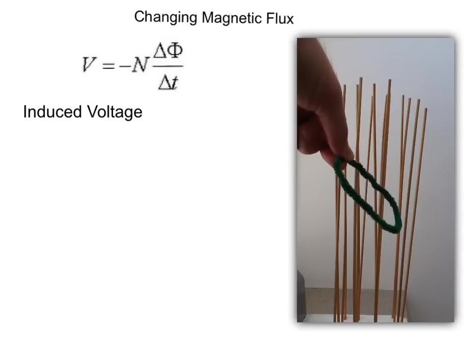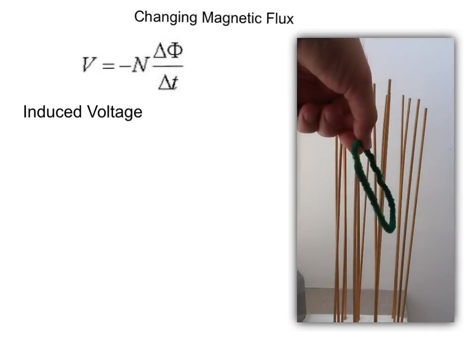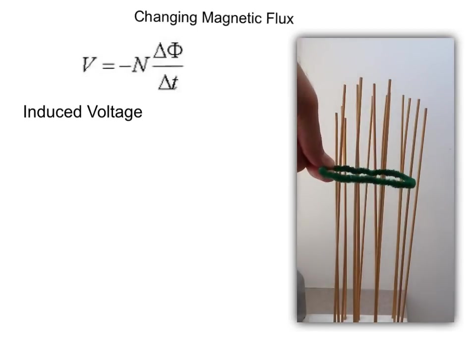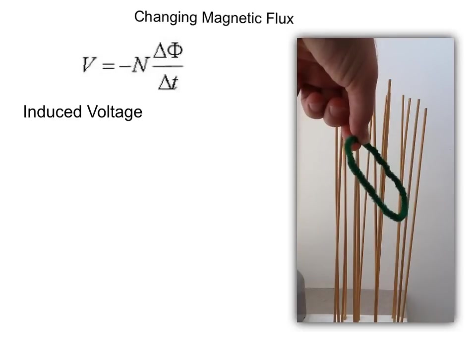And when I tilt it, I reduce the area and thus decrease the number of field lines through that area. Now I increase the area and then decrease the area. So I keep changing the magnetic flux. This changing magnetic flux over time will create or induce a voltage in the coil. That induced voltage will then cause current to flow.